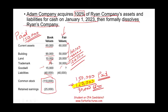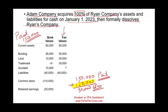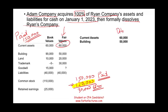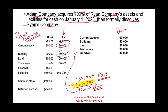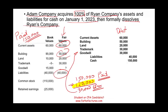Now let's book the journal entry. We're transferring their assets and liabilities at fair value. We debit current assets $60,000, debit building $50,000, debit land $20,000, debit trademark $30,000, and debit goodwill $30,000. We credit liabilities $40,000 and credit cash $150,000 for what we paid. Always double-check: debits total $190,000 and credits total $190,000 — debits equal credits.